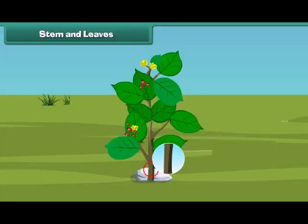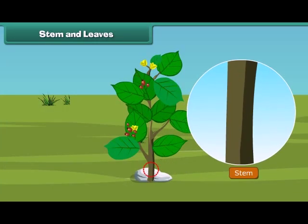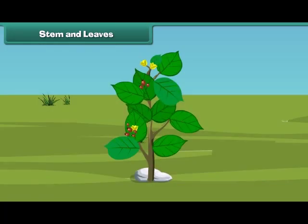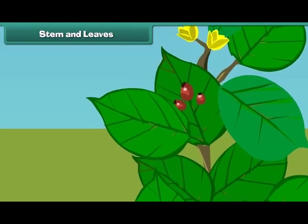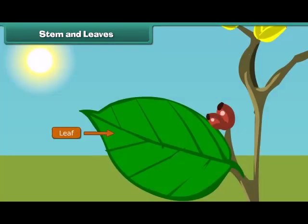The next part of a plant is the stem. A stem is the hard part of the plant which grows above the ground. It bears leaves, fruits, and flowers. A stem also supports the plant. Do you know which part of the plant helps them to prepare food? That's right. It is the leaves.